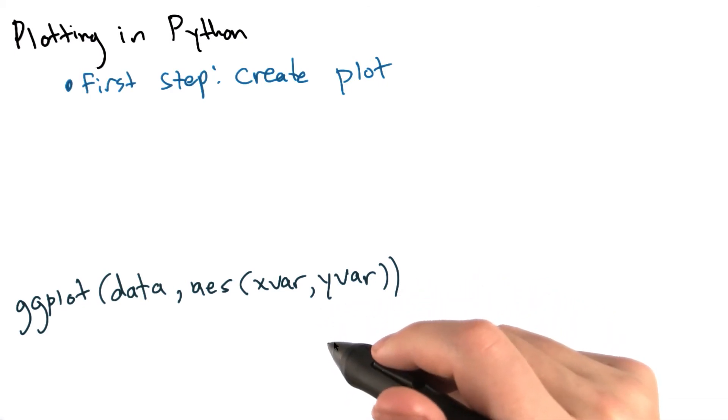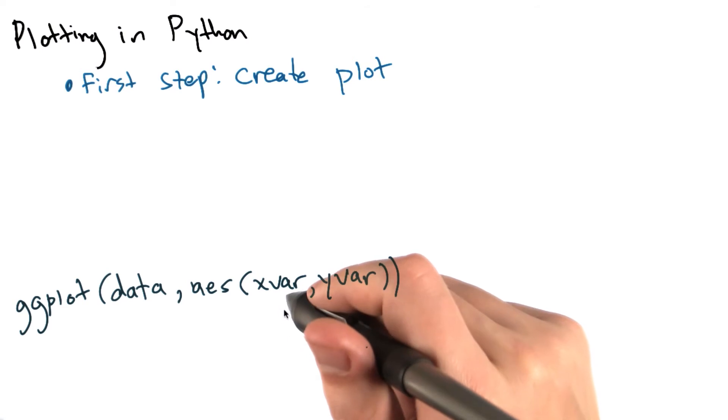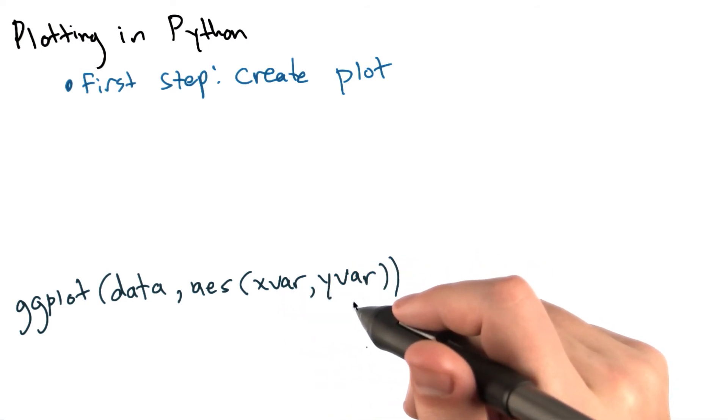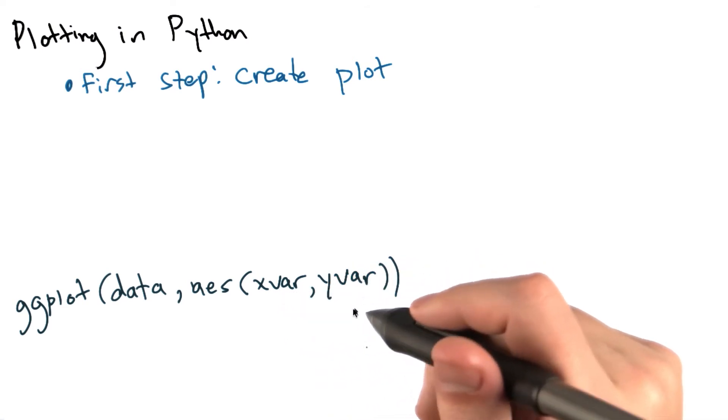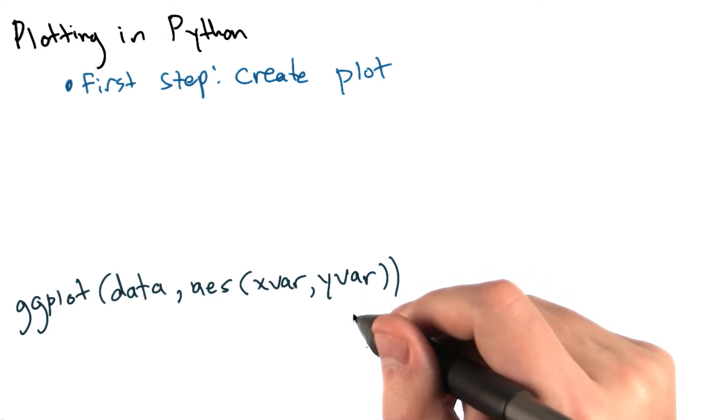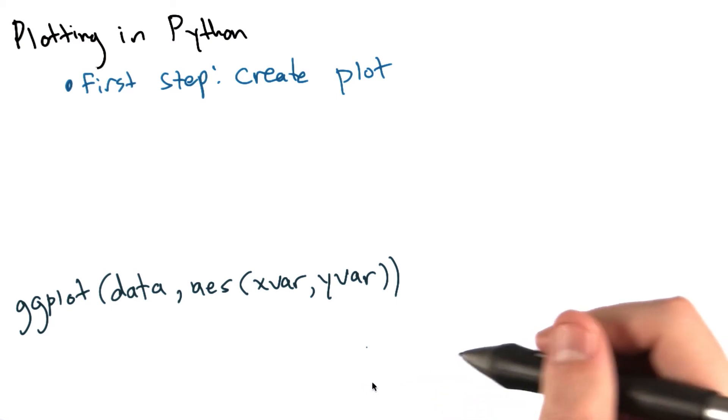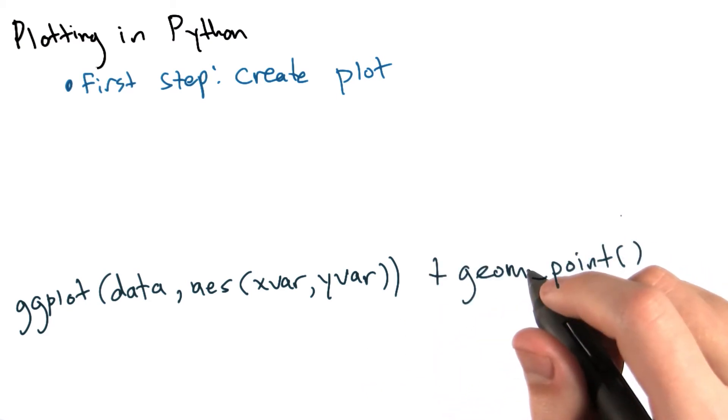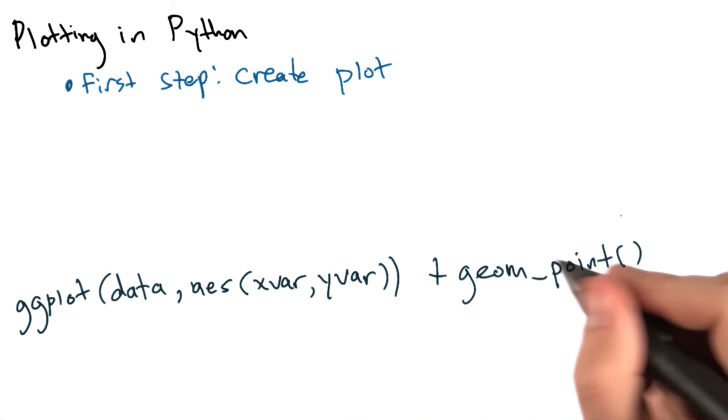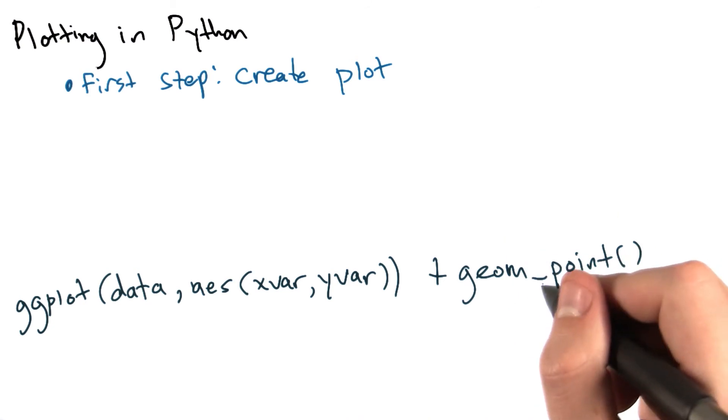So far we've said that we'll have a plot which is mapping xvar to the x-axis, yvar to the y-axis, but we haven't said yet what type of geometric object is going to represent this data. So if we add plus geom_point to this statement, we'll create a scatter plot. If we also add plus geom_line to the graphic, we'll connect all of these points to each other with lines.